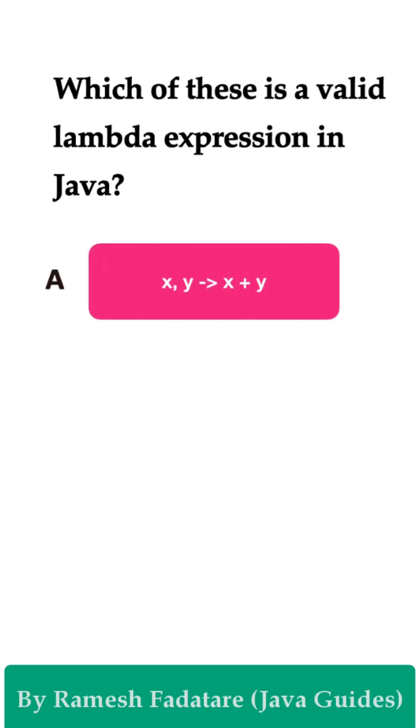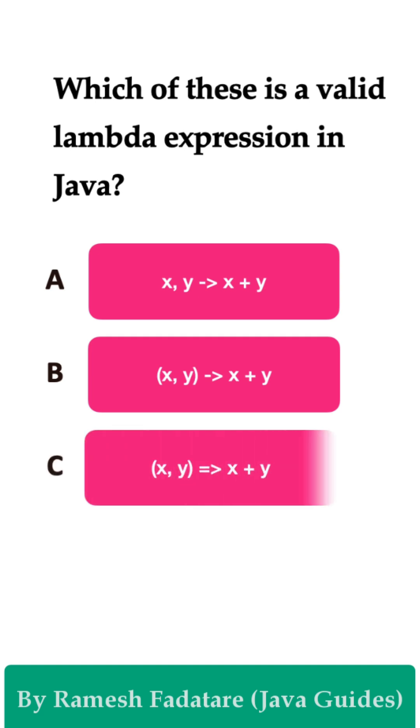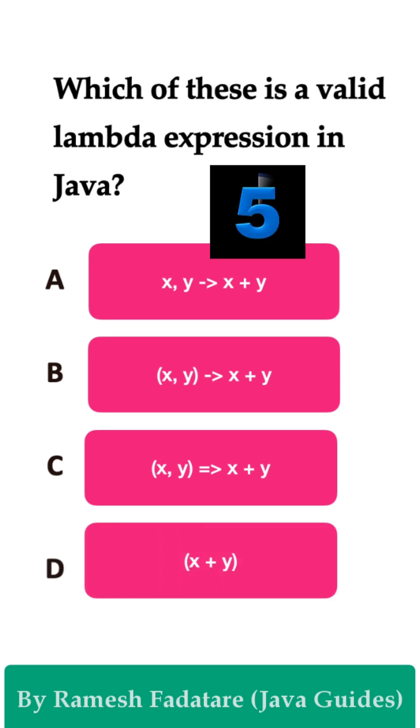Option A: x, y -> x + y. Option B: (x, y) -> x + y. Option C: (x, y) => x + y. Option D: (x + y). You have five seconds to answer this question.